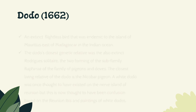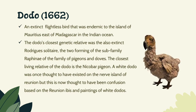Dodo, during 1662. An extinct flightless bird that was endemic to the island of Mauritius, east of Madagascar in the Indian Ocean. The Dodo's closest genetic relative was the also-extinct Rodrigues Solitaire, the two forming the subfamily Raphinae of the family of pigeons and doves. The closest living relative of the Dodo is the Nicobar pigeon. A white dodo was once thought to have existed on the island of Réunion, but this is now thought to have been a confusion based on the Réunion Ibis and paintings of white dodos.